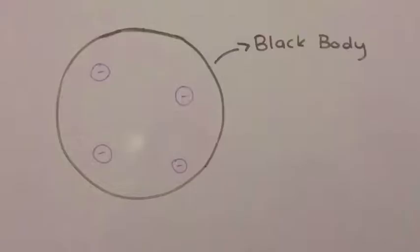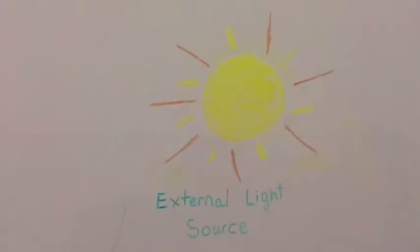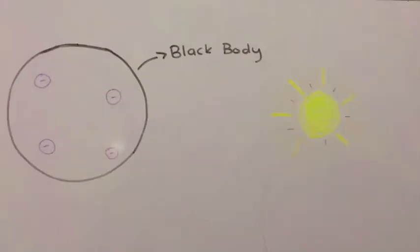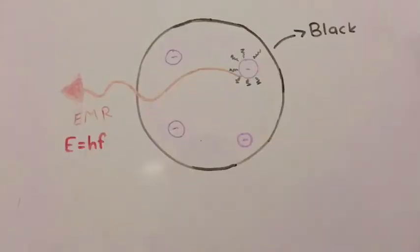On a microscopic level, particles in the blackbody can absorb energy from incoming electromagnetic radiation from an external source. When a particle absorbs this energy, it is converted to kinetic energy and the particle starts to oscillate. If the particle is charged, it converts its kinetic energy back into electromagnetic radiation, as an accelerating charged particle produces EMR. The frequency of the emitted radiation will be proportional to the frequency at which the particle is oscillating, and would rarely be at an extremely high or low value, which is why the frequency of the emitted radiation usually falls into the middle portion of the blackbody radiation curve.